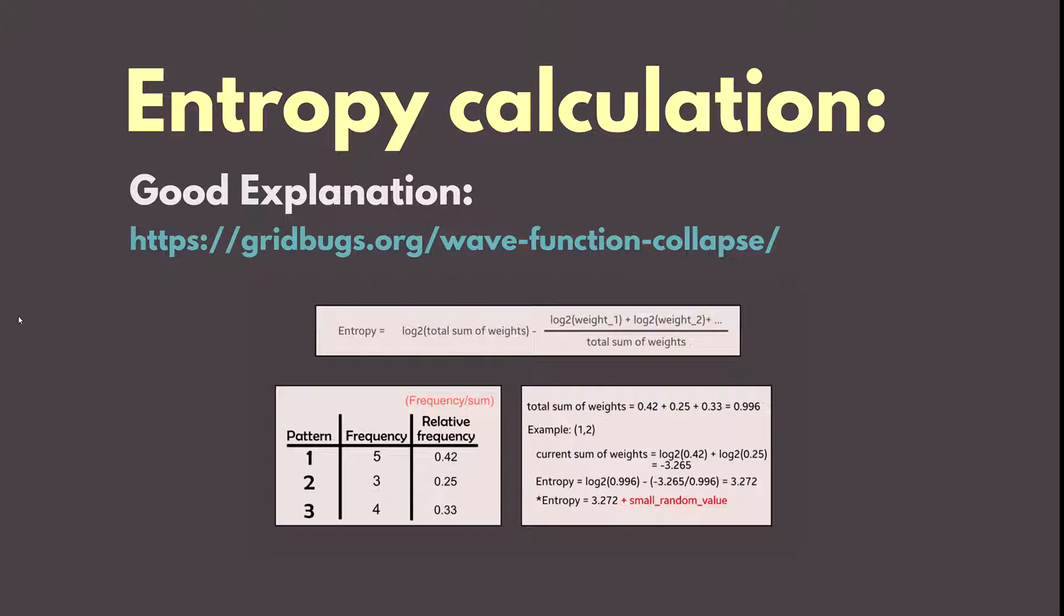Entropy is a measure of uncertainty. This just means that if we have calculated entropy for each cell in our grid we could find one with the lowest entropy. The one that will have the best chance to collapse and that our choice will be correct.